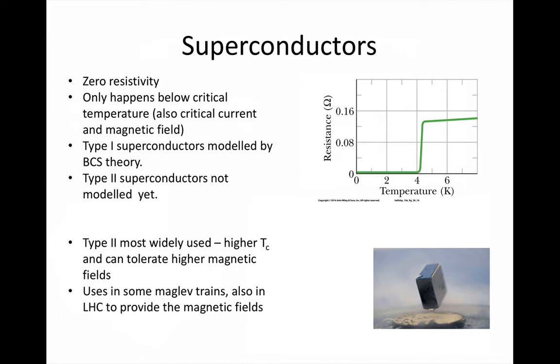All of these early superconductors were type 1 and had very low critical temperatures. It was also found that they stopped superconducting if the current in them was too large, or if a large enough magnetic field was applied to them. It wasn't until type 2 superconductors were discovered in the 1980s that serious use could be made of them. These operated at liquid nitrogen temperature and could tolerate much stronger magnetic fields without losing their superconductivity. They are now used in NMR machines, some maglev trains, and the strong magnets in particle accelerators like the Large Hadron Collider.